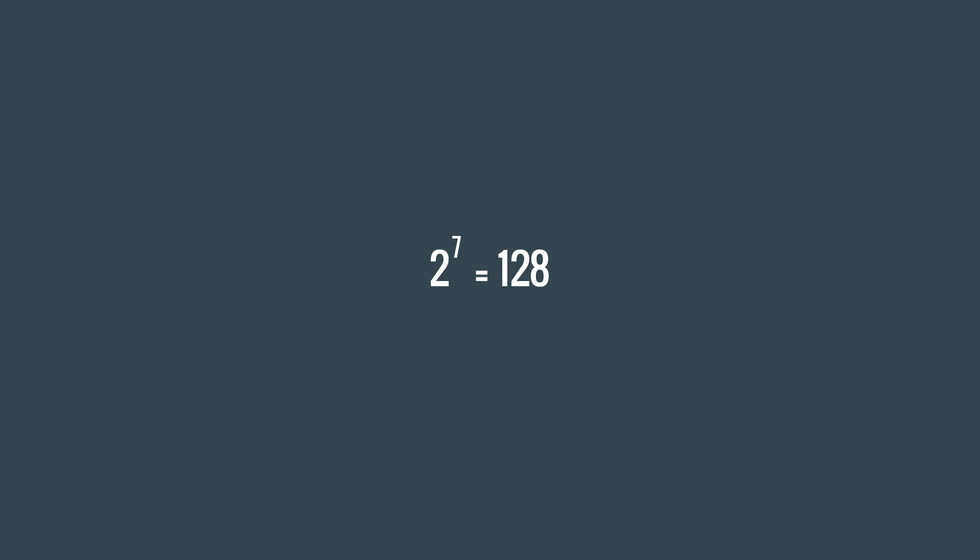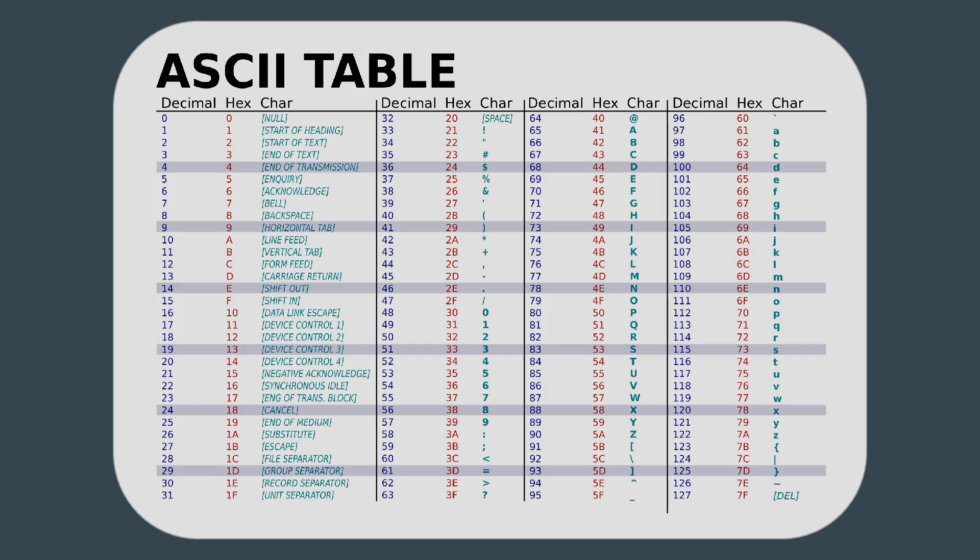And that is exactly what the American Standards Association did back in 1963 when they created ASCII — a standard way to encode text using computers with 128 different characters: numbers, digits, punctuation, and some control codes. All in 7 bits.